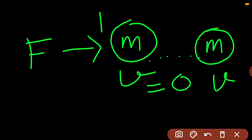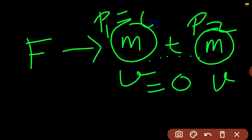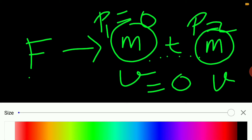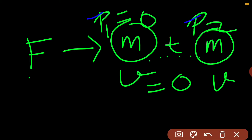Here we have in the first case momentum P1, and in the second case we have momentum P2, and it takes time T to change the momentum. So P1 is 0 because the velocity was 0, and P2 will have some value. To change the momentum we require force, and how fast the change is taking place — how fast P1 is becoming P2 — depends upon force. If I apply more force, the change in momentum will be more, so the rate of change of momentum also will be more.